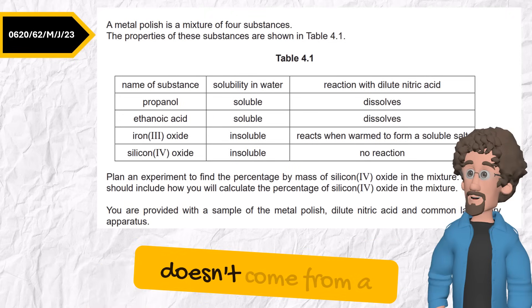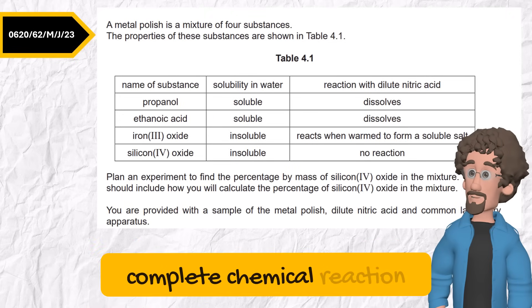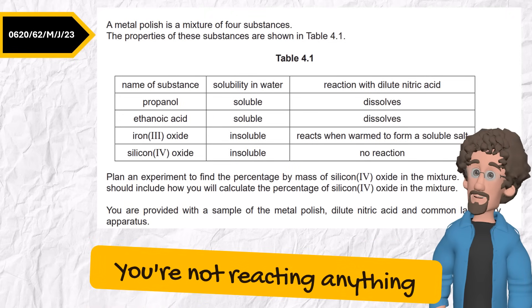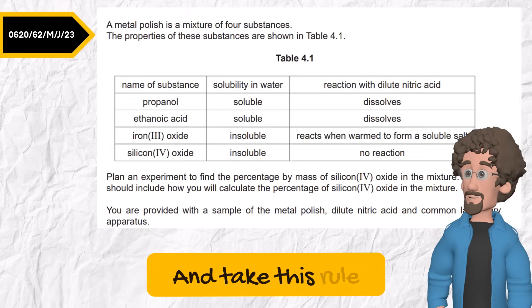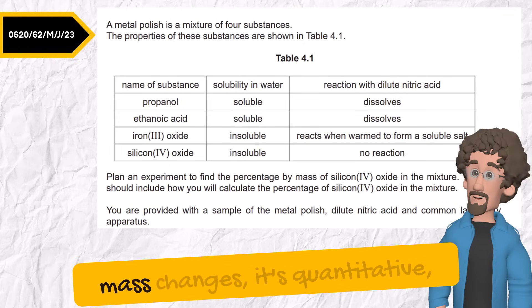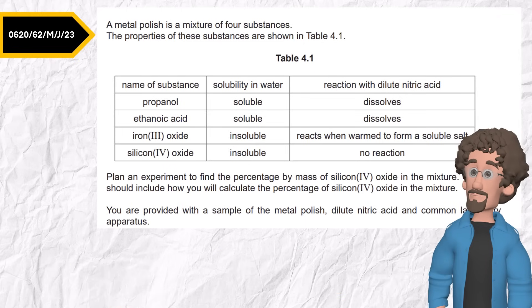Simply because the calculation doesn't come from a complete chemical reaction. You're not reacting anything. You're physically separating. So it's a purity test. And take this rule. If acid reacts and mass changes, it's quantitative, not just purity.